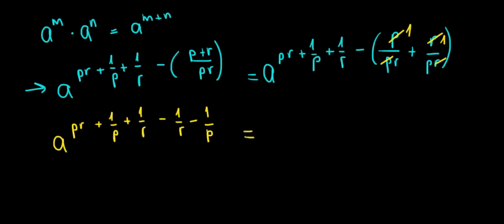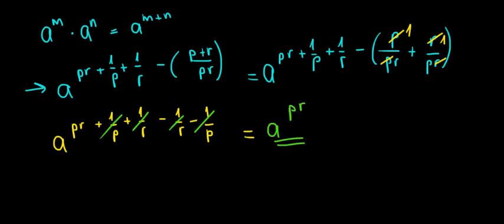We can see that plus 1 over p and minus 1 over p cancel out, and plus 1 over r and minus 1 over r cancel out as well. So we're left with a to the power pr, and that's the final answer.